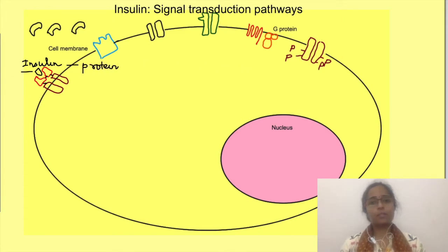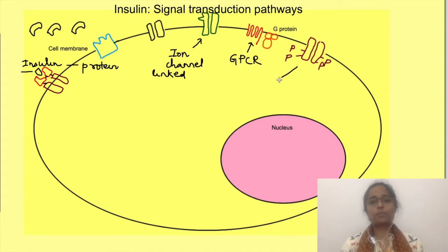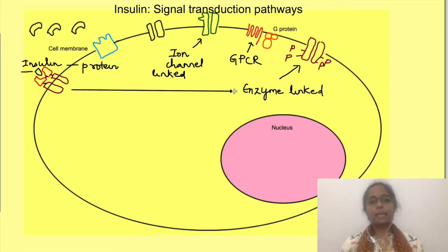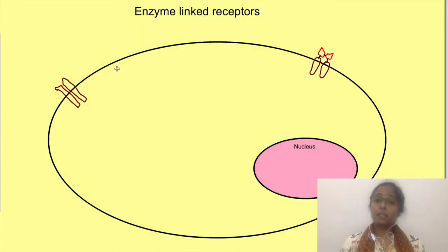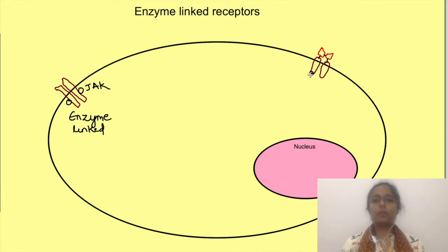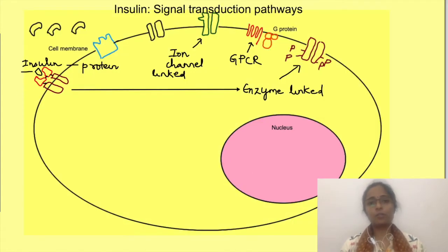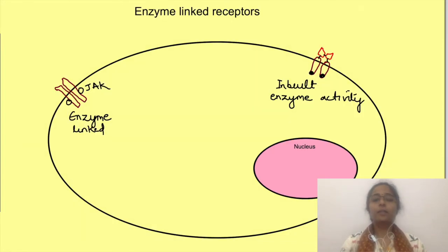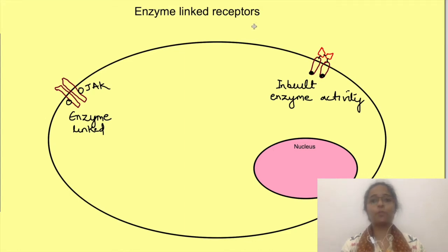Cell membrane receptors are of three types in general: ion channel linked receptors, G protein linked receptors, and enzyme linked receptors. Insulin receptors are enzyme linked receptors. This family of receptors either are linked to another enzyme like in the JAK-STAT pathway, or they have inherent or inbuilt enzymatic activity like insulin receptors, which have inherent tyrosine kinase activity. The insulin receptors are present as tetramers — they have four polypeptides or subunits which assemble to form the receptor.